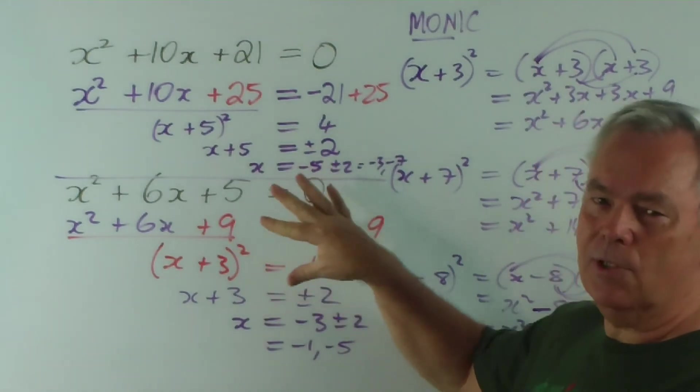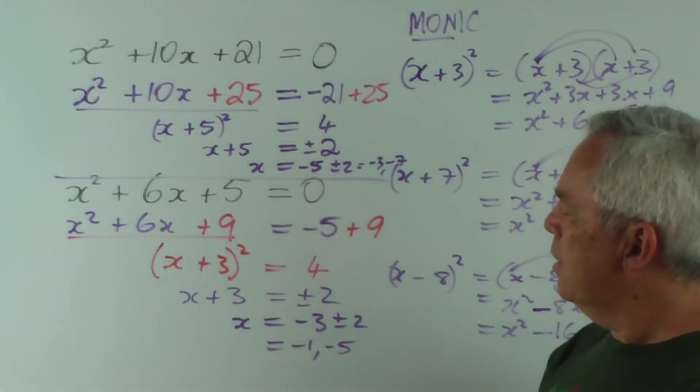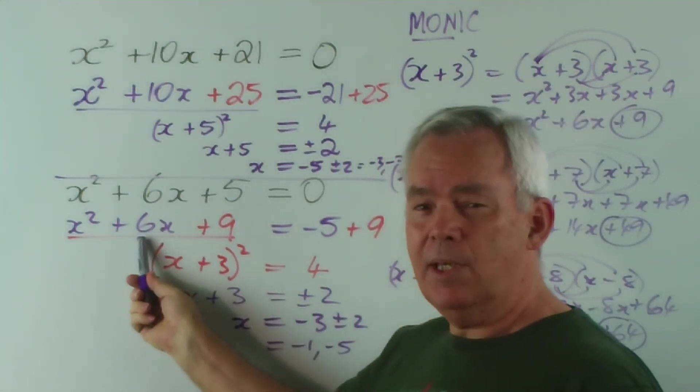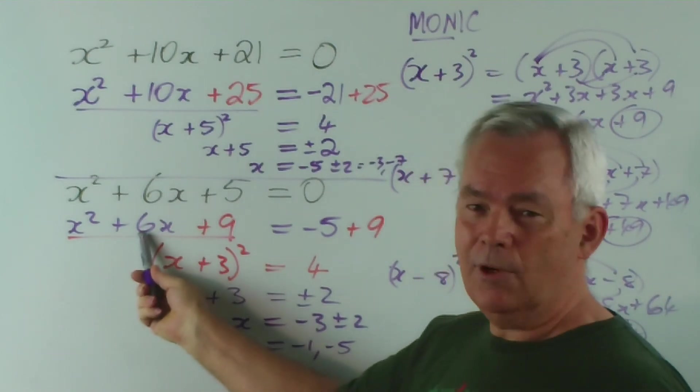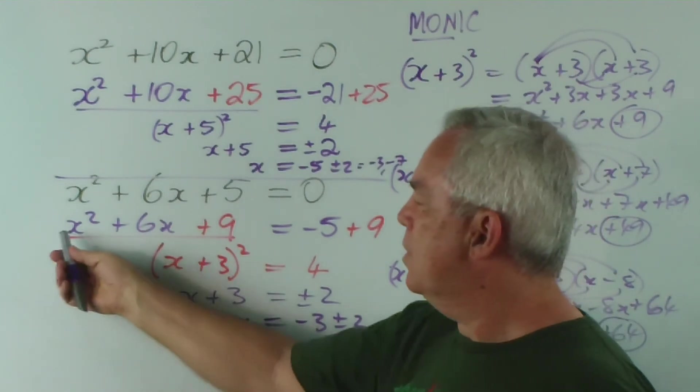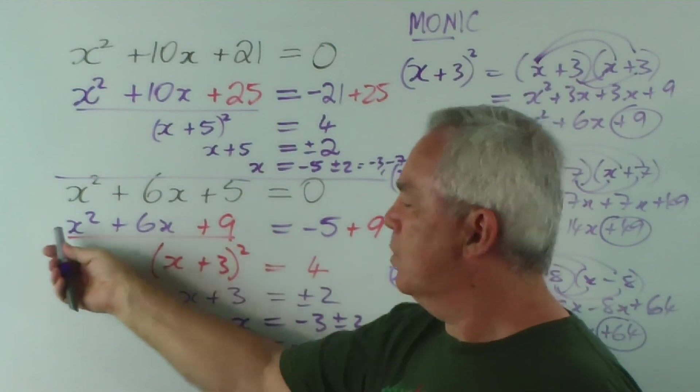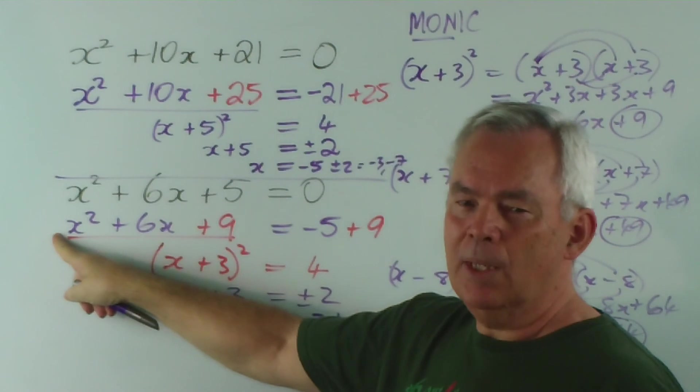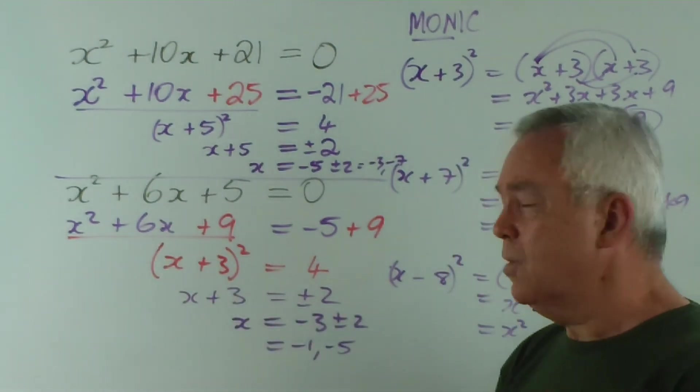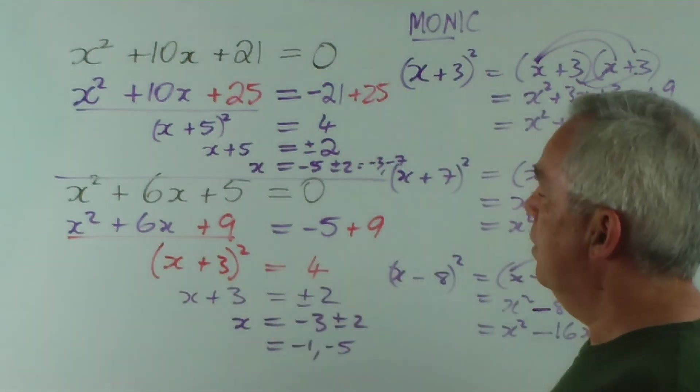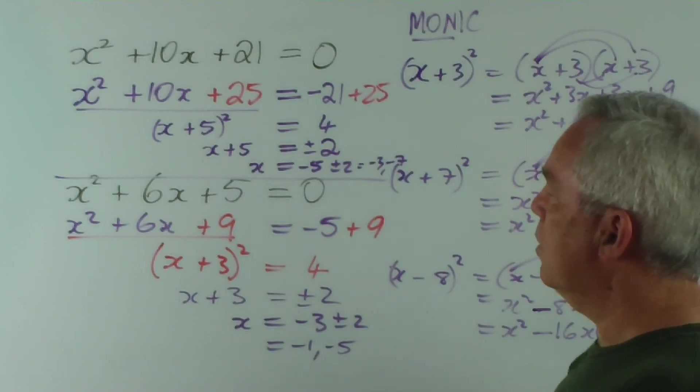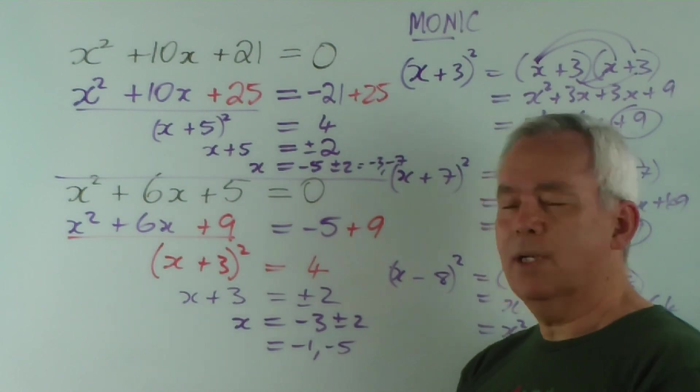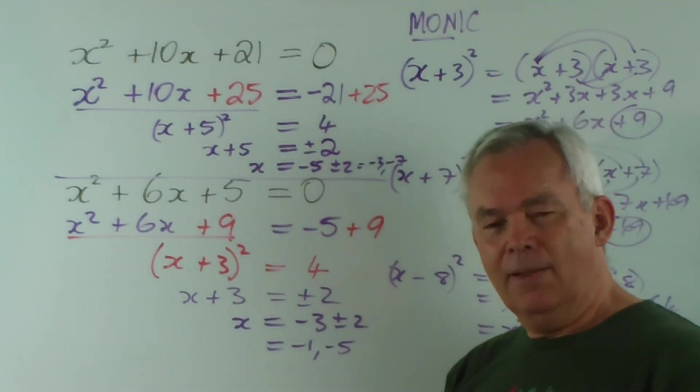So where do we go from here? This is the first step. The second step is how to learn how to handle odd numbers here, which will unfortunately give us fractions. And the third step is to understand how to deal with a general quadratic which has numbers out the front, that is, a non-monic. So we'll look at those in future videos. But in this one, that's how you solve a quadratic equation by completing the square. And it's actually quite a nice method. Thank you for watching.